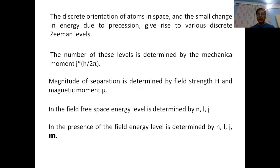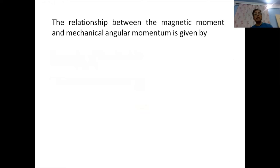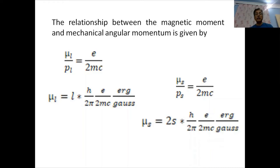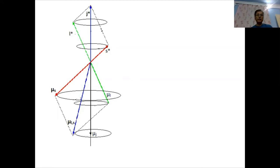The relationship between magnetic moment and mechanical angular momentum is given by μ_L / p_L = e / (2mc), where μ_L is the magnetic moment and p_L is the mechanical moment. So μ_L = (L* h/2π)(e/2mc) per Gauss. In the same way, for spin: μ_S / p_S = e/(2mc), and correspondingly μ_S = 2(S* h/2π)(e/2mc) per Gauss. The factor of 2 appears because an electron precesses about its own axis twice, which is missing in the case of orbital motion.